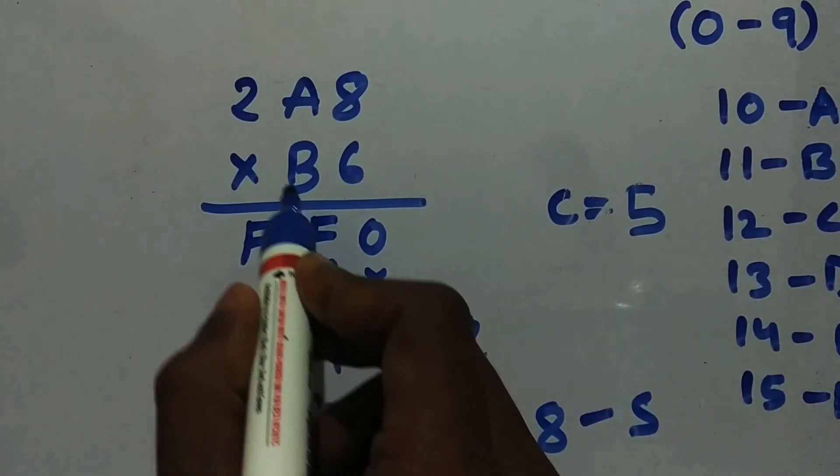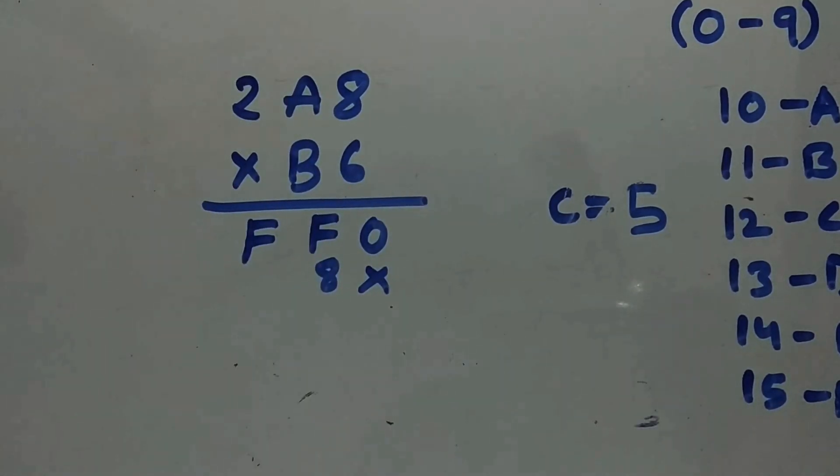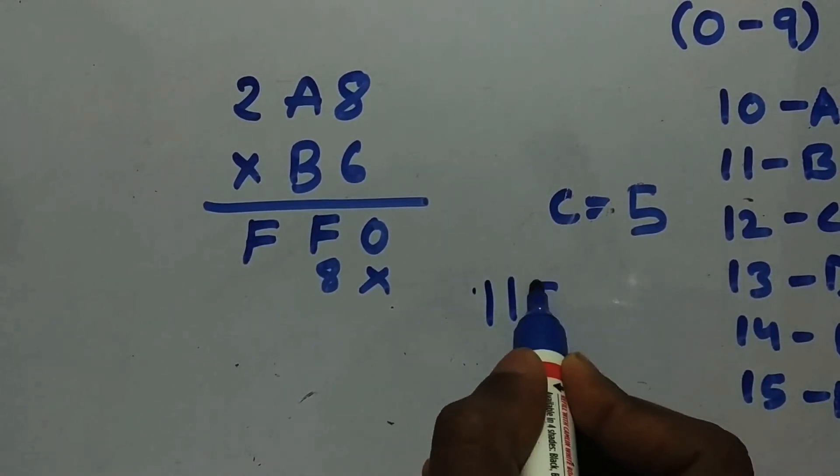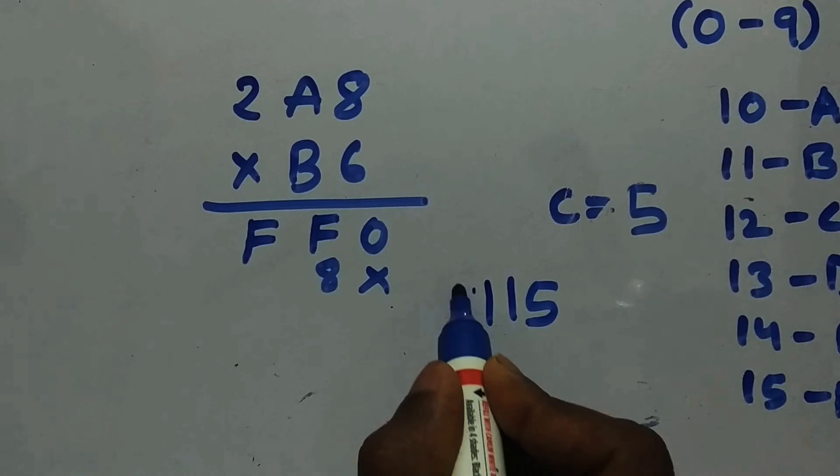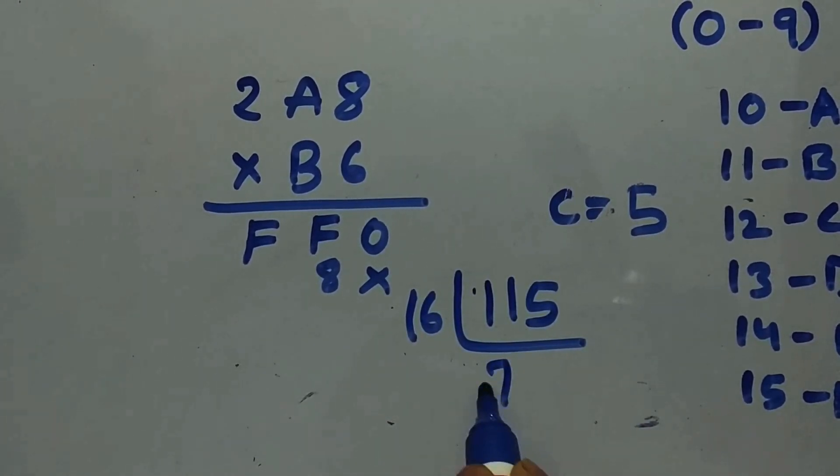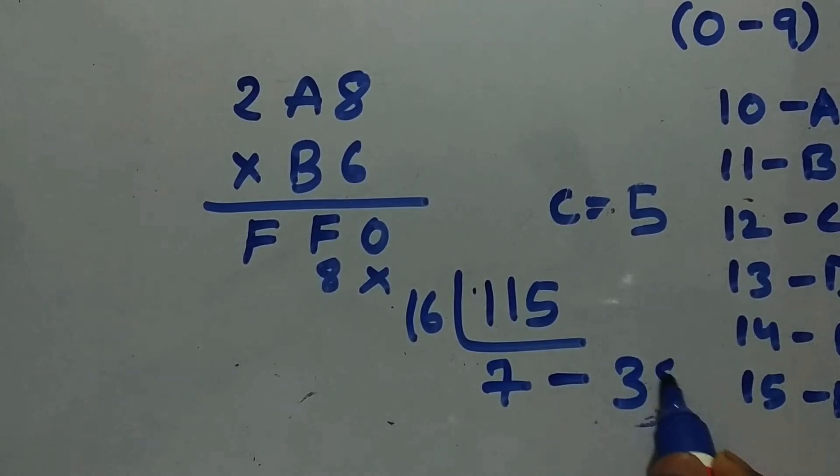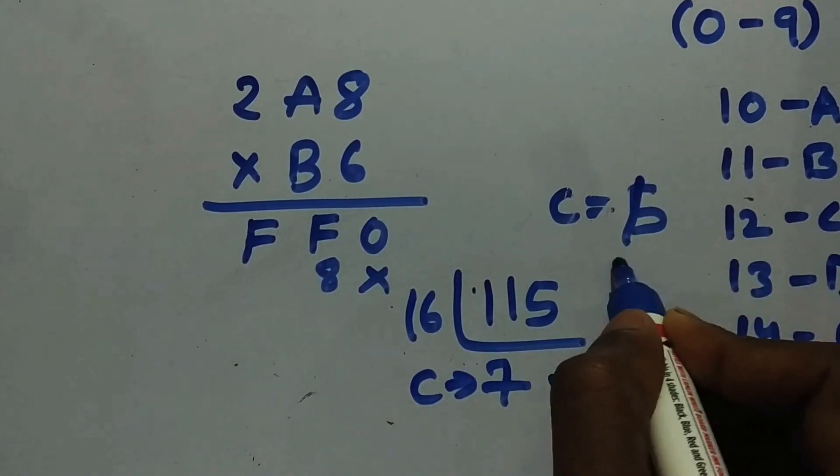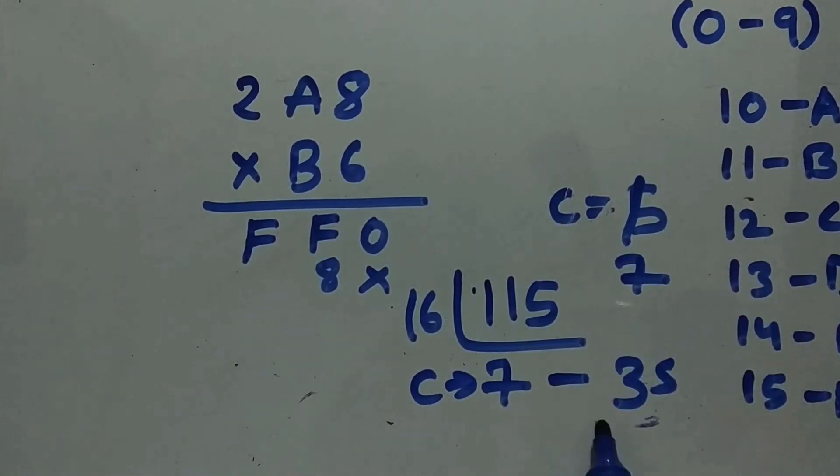Next one, 11 into 10 is 110. We got 110, we need to add carry, it's 115. Now we need to convert 115 into base 16. 16 times 7 is 112, so 3 is our sum. Carry is 7, so sum you can write it over here.